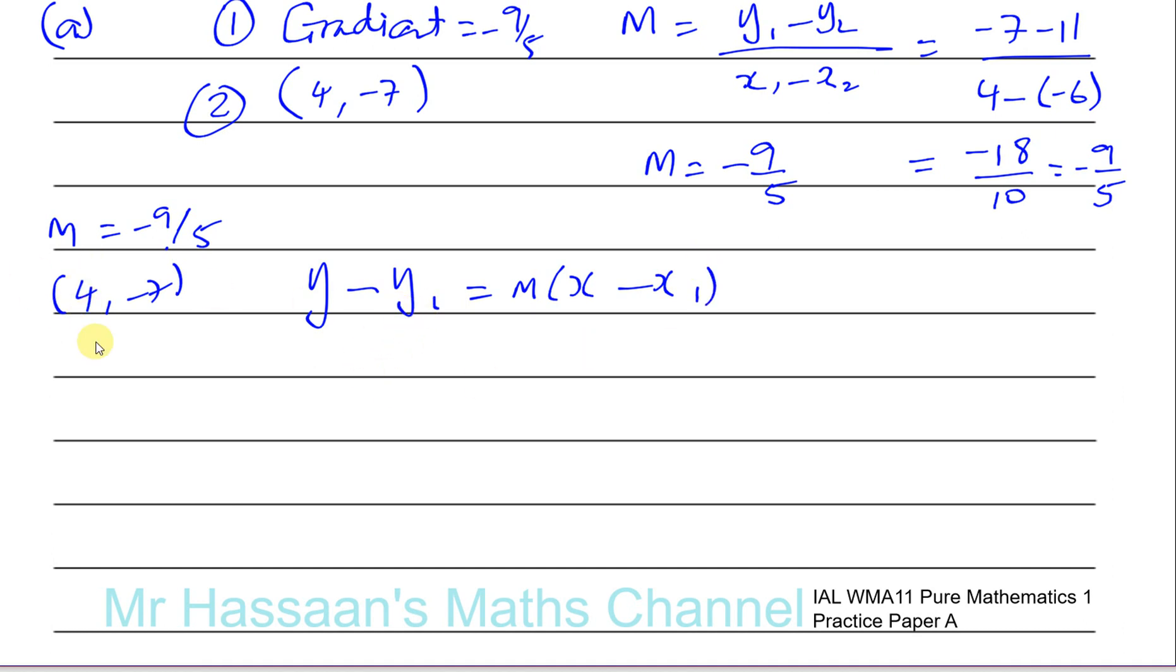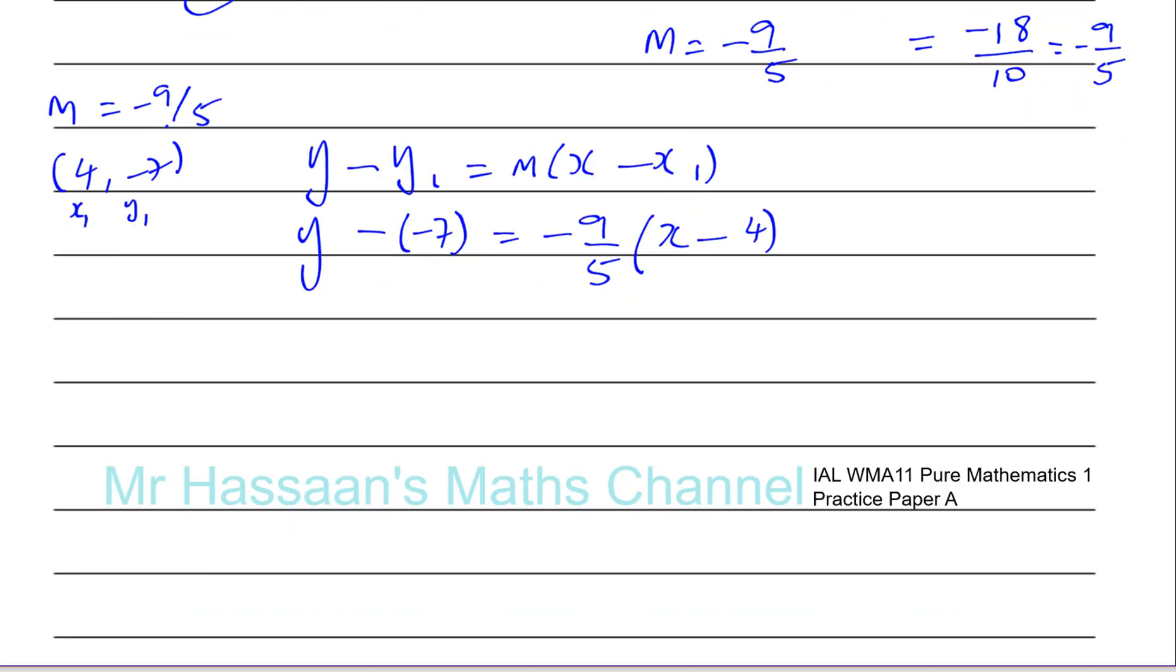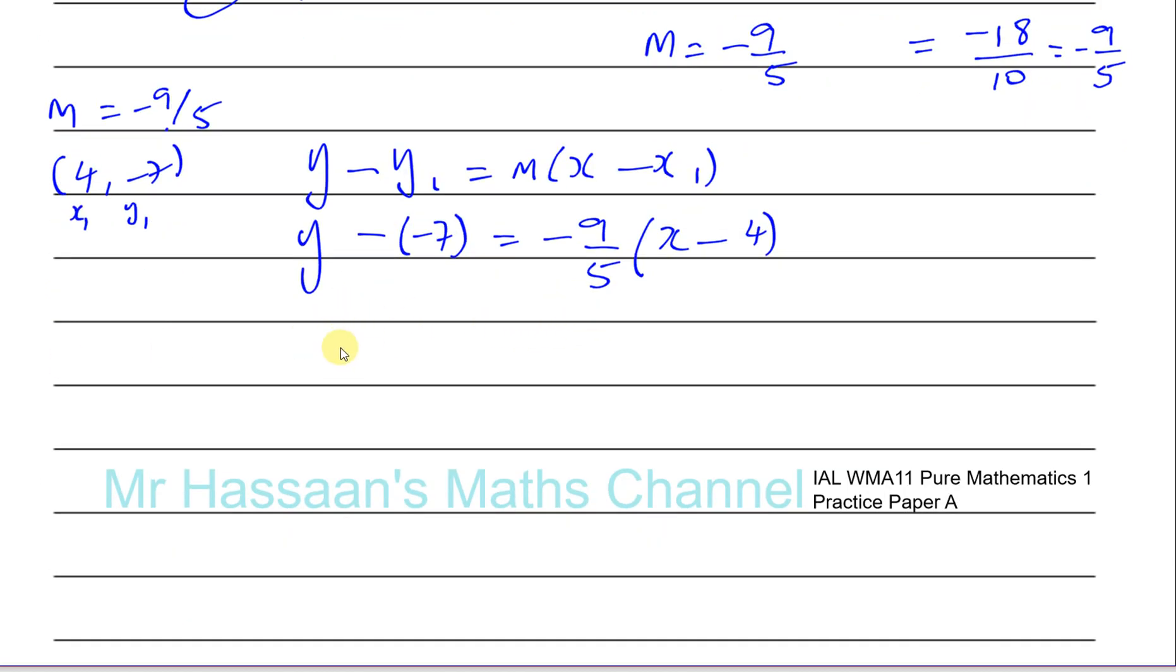These two values are X1 and Y1, and your Y and X are the variables. So you write Y - (-7) equals M, which is -9/5, times X - 4. Simplifying: Y + 7 = -9/5(X - 4).